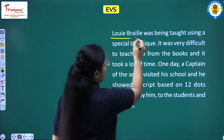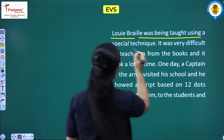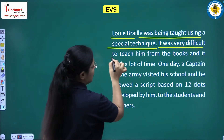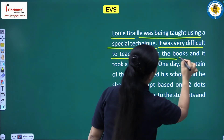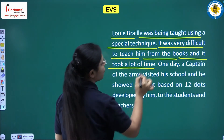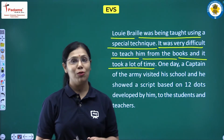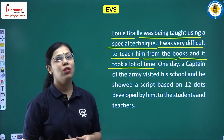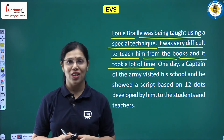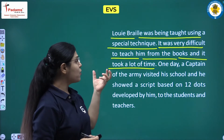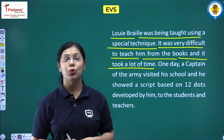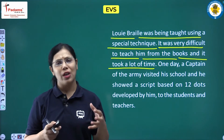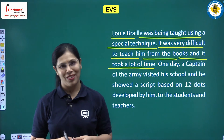Louis Braille was being taught using a special technique. It was very difficult to teach him from books and it took a lot of time. His teachers were managing to teach him at school, but teaching through books was truly a difficult and time-consuming task.